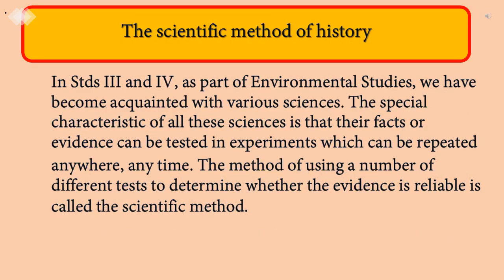The scientific method of history: In Standard 3 and 4, as part of environmental studies, we have become acquainted with various sciences. The special characteristic of all these sciences is that their facts or evidence can be tested in experiments, which can be repeated anywhere, anytime. The method of using a number of different tests to determine whether the evidence is reliable is called the scientific method.